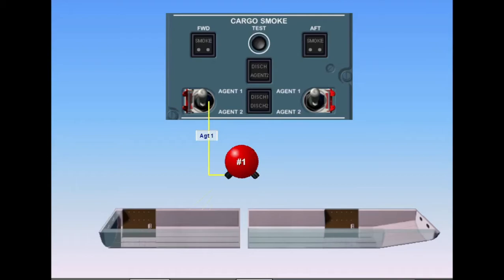Two guarded discharge toggle switches control the bottles. Each switch position controls one squib, or discharge head, of each bottle. When either the forward or aft switch is toggled upward to the agent one position, the respective squib is triggered and the halon enters the respective compartment.